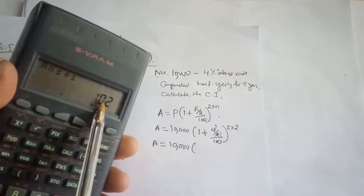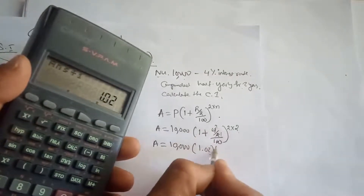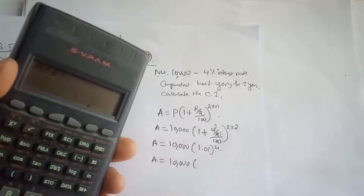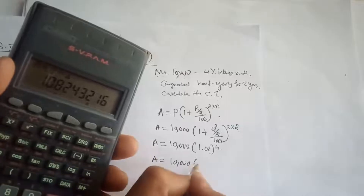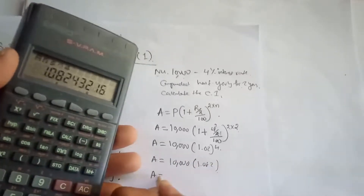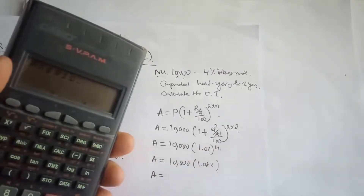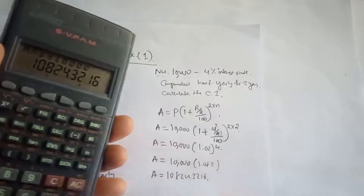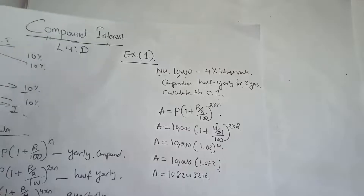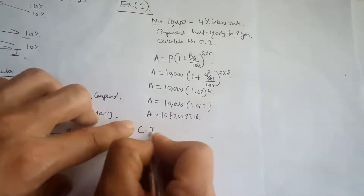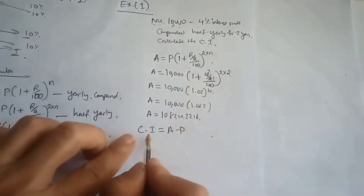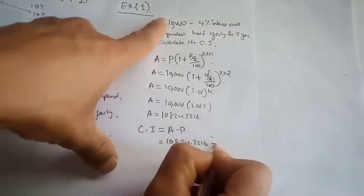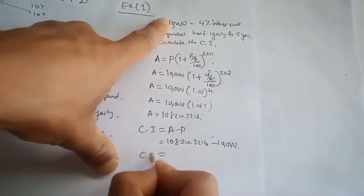So the amount equals 10,000 multiplied by 1.02 raised to 4, which gives approximately 1.0824. Therefore the amount is 10,824.32. Compound interest equals amount minus principal, so compound interest equals 10,824.32 minus 10,000.